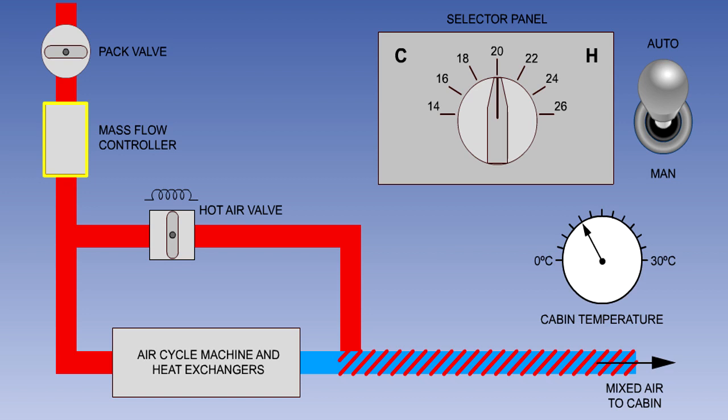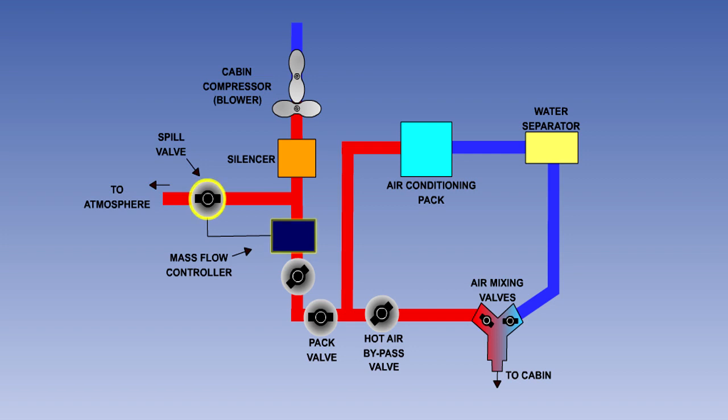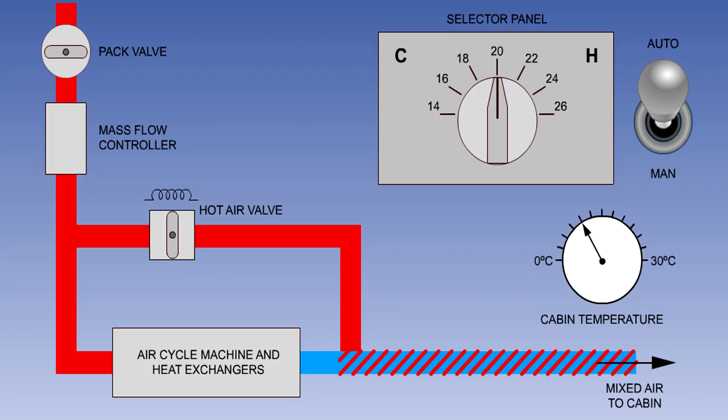The pack flow control valve may incorporate a mass flow controller, or it may be a separate unit. The mass flow controller is fitted to ensure that a constant mass flow of air is supplied to the air conditioning packs, regardless of the engine RPM or intake air pressure. This helps to make control of the aircraft pressurization much easier. When used with blower systems, the mass flow controller operates a spill valve, which dumps excess air to atmosphere. In systems that use engine bleed air, the mass flow controller adjusts the airflow through itself, so that the required mass flow passes to the system irrespective of changes in the value of the pressure upstream and downstream of the unit.